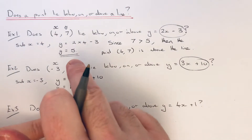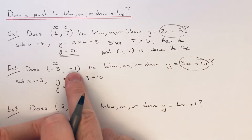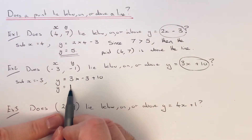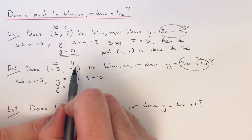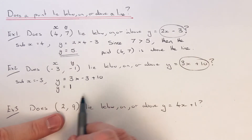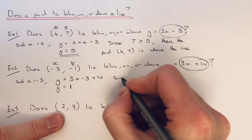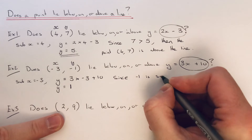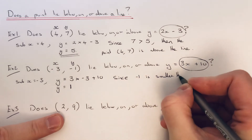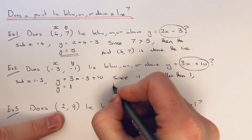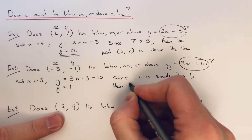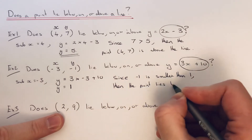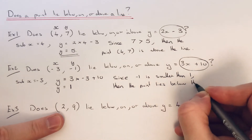If we look back at our point, which is minus 3, minus 1, minus 1 is smaller than 1. So this point lies below the line. Since minus 1 is smaller than 1, then the point lies below the line.